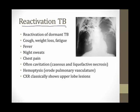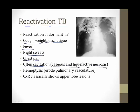Reactivation TB occurs in a patient whose primary exposure had resolved — perhaps leaving a Ghon complex or latent bacteria hiding in the body — that then reactivates, usually when some immunocompromise develops. Symptoms include cough, weight loss, fatigue, fever, night sweats, and pleuritic chest pain. High yield: reactivation TB classically causes cavitation — caseous and liquefactive necrosis creating a cavity, usually in the lungs, which can cause hemoptysis if it erodes into the pulmonary vasculature. The chest X-ray classically shows an upper lobe cavitary lesion, because TB likes the upper lobes where the VQ ratio is highest.